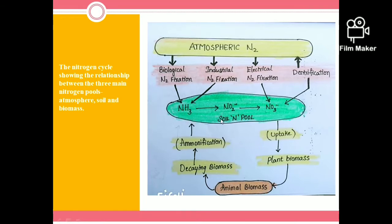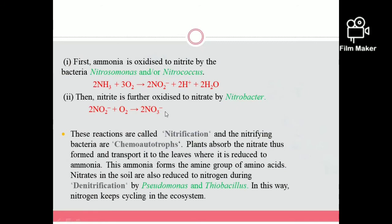Plants absorb the nitrogen from the soil. When animals graze on plant parts, organic nitrogen passes to animals. When plants and animals die, decomposition converts organic nitrogen to ammonium — this is called ammonification. This is the whole process of the nitrogen cycle consisting of the atmospheric pool, soil pool, and biomass pool.